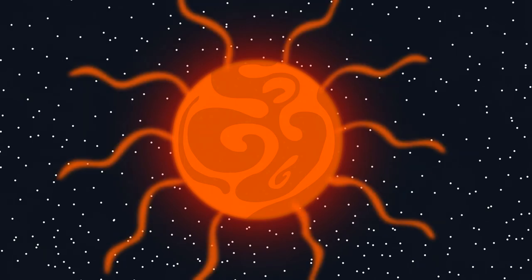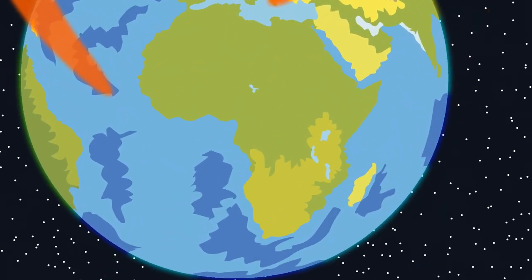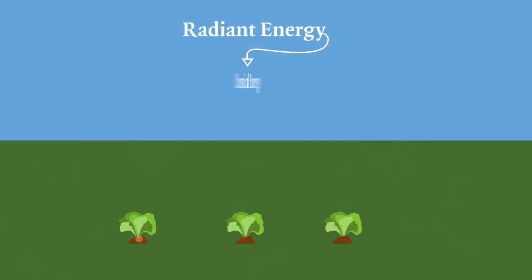It starts when the radiant energy from the sun reaches the Earth's atmosphere. We know that it gets hotter and some of that energy is used by plants for photosynthesis. Then the plants photosynthesize and turn the radiant energy into glucose, which is chemical energy.